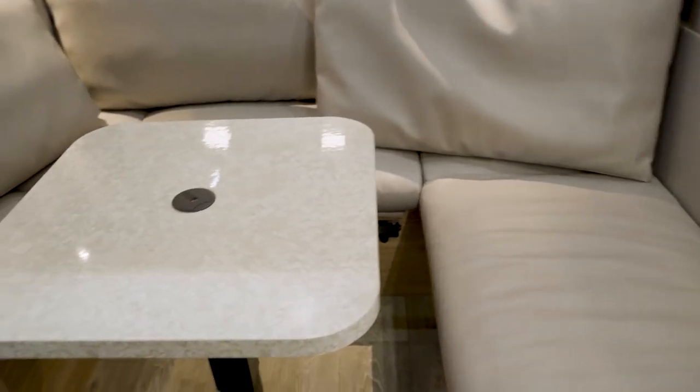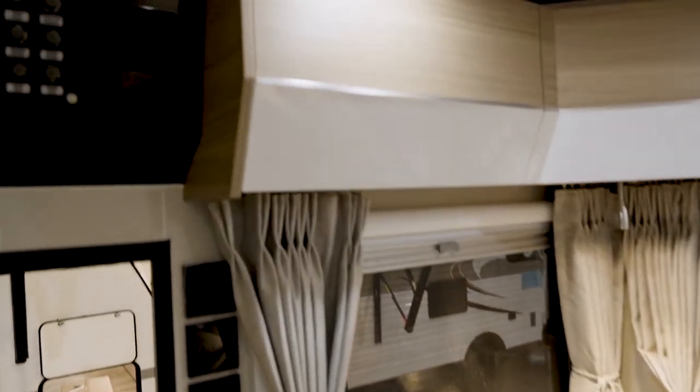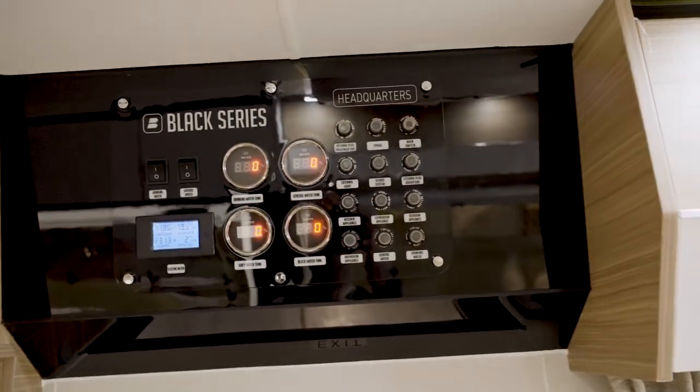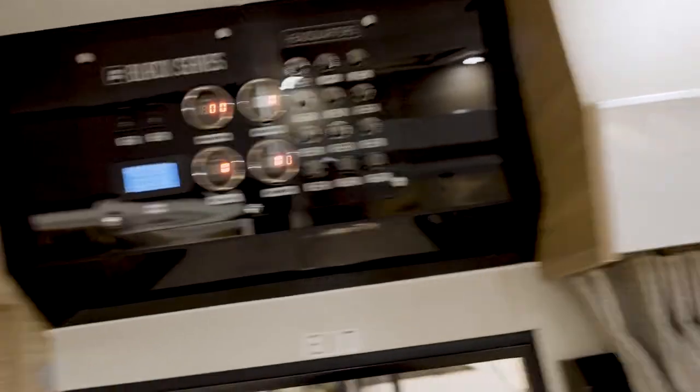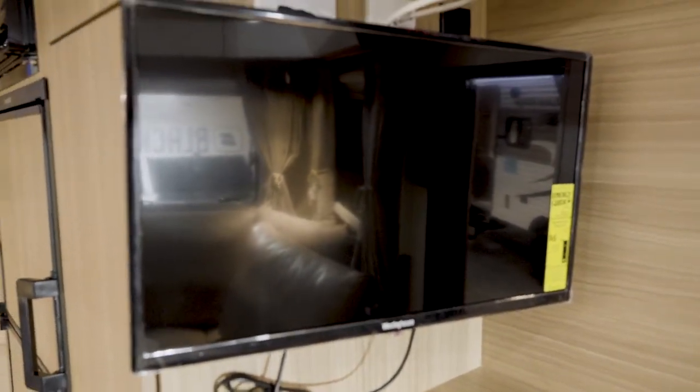And then finally this nice u-shape seating area. Like all the other Black Series, you've got the command center up here with all your controls. Also comes with another TV here in the seating area.